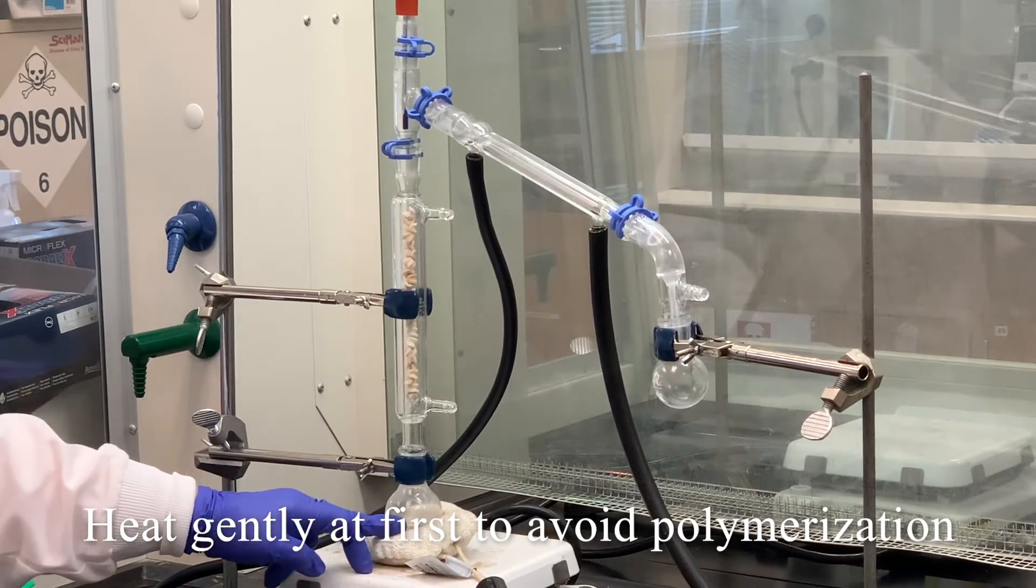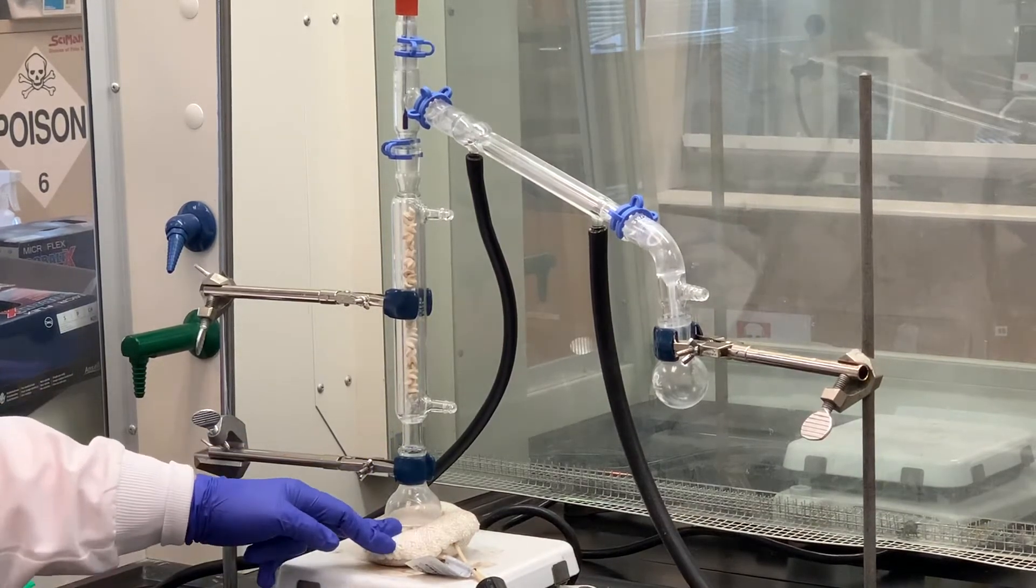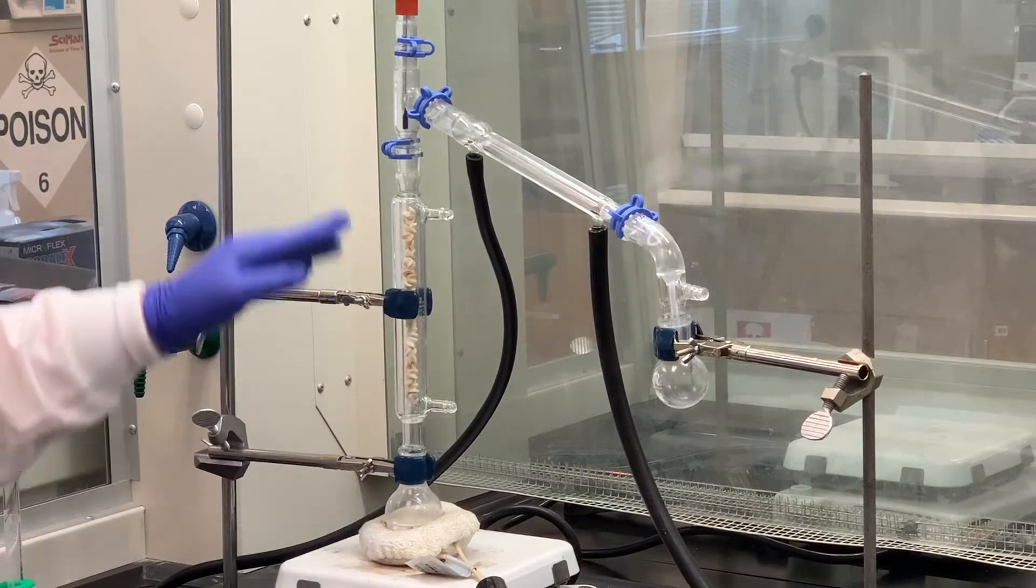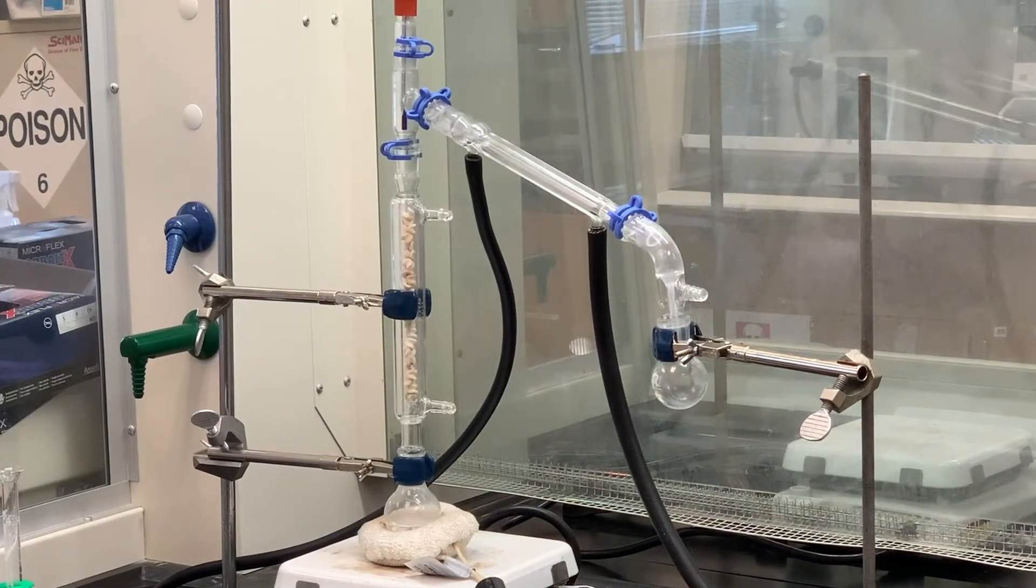This will probably turn kind of an orange, then it will kind of turn green, and it probably will turn somewhat black. But hopefully we can get enough of the cyclohexene to come over to do some chemical tests to see if we did form a carbon-carbon double bond.